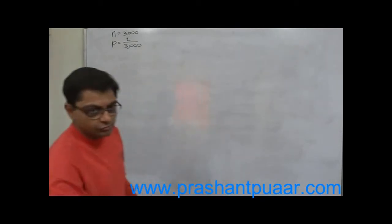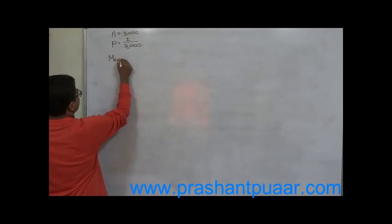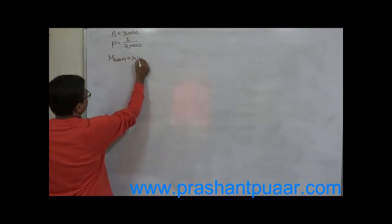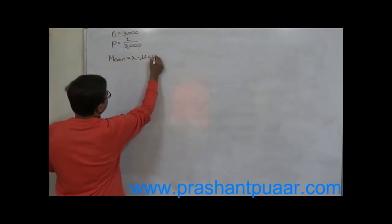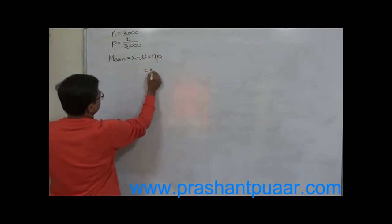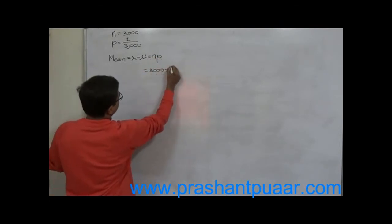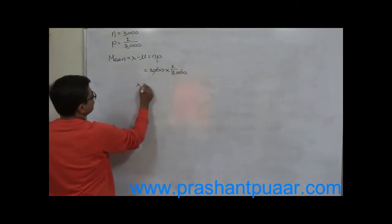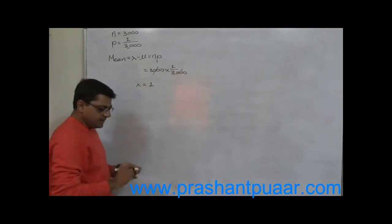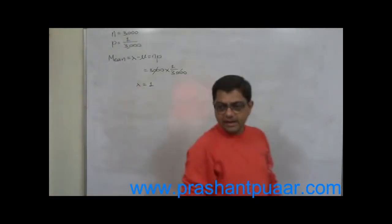To check whether the problem is solvable by Poisson distribution, first we have to calculate mean. Mean, lambda or mu, is ultimately NP, that is 3000 into 1 by 3000, so mean comes to 1. If mean is around 10 or 12, we can use Poisson distribution.